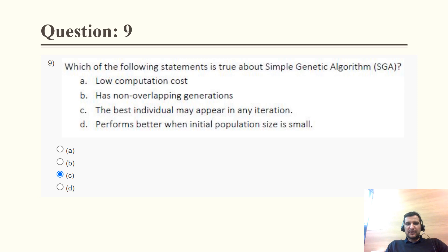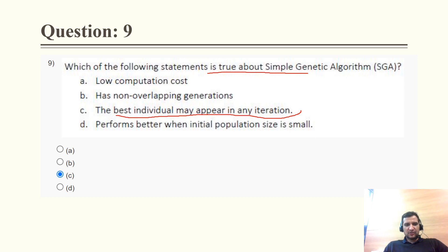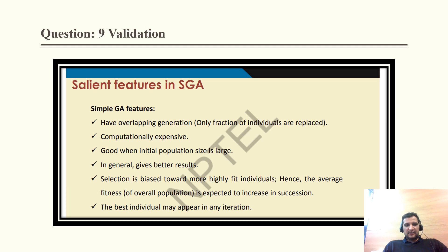Question 9: Which of the following statements is true about simple genetic algorithm (SGA)? The options are: low computational cost, has no overlapping generation, best individual may appear in any iteration, and performs better when initial population size is small. The true statement is 'best individual may appear in any iteration.' Low computational cost is false — SGA is computationally expensive. It has overlapping generations.